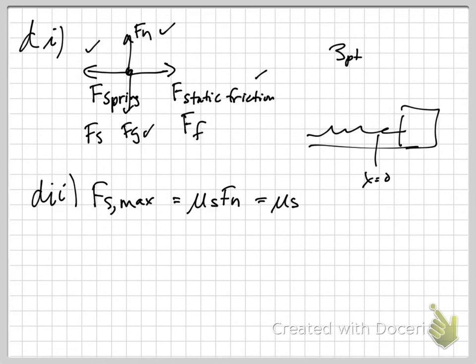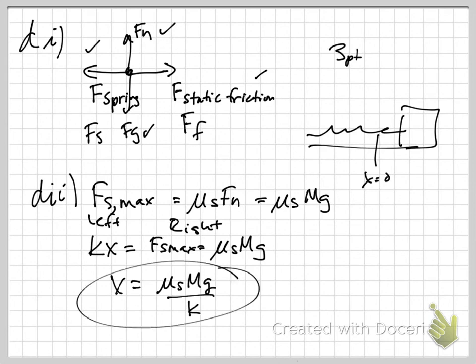In this case, mu s, excuse me, in this case, the normal force is just mg. So, that's the net maximum force that friction can provide. Now, we have equilibrium here. So, the spring force, which is Kx, is equal to Fs max, which we just decided was mu s times mg. I'm not going to worry about positive or negative signs because the forces are equal. So, we're just saying left equals right. Okay? And we don't have to worry about negative signs here. A little algebra gives us x equals mu s times mg over k.